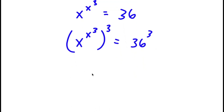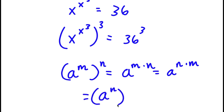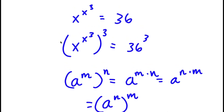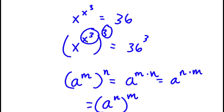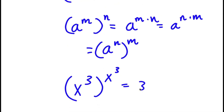Using the rule that a to the power of m to the power of n equals a to the power of m times n, and since m and n are interchangeable, I can switch the inner exponents. Treating x to the power of 3 as m and 3 as n and swapping, I get x to the power of 3 to the power of x to the power of 3, equal to 36 to the power of 3.